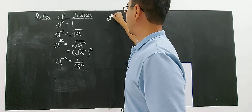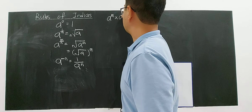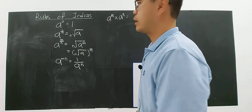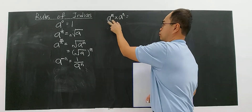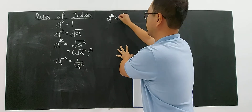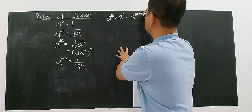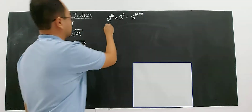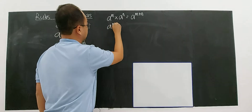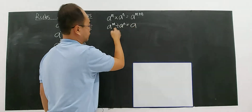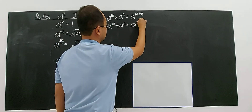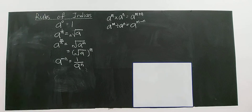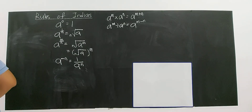If you have A to the power of M multiplied by A to the power of N — same base — you can add up the indices. And if you divide A to the power of M by A to the power of N — same base — you subtract the indices, taking M minus N. That's very important.